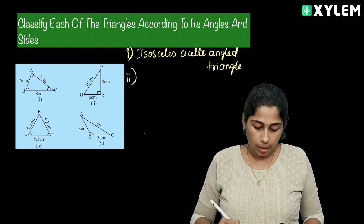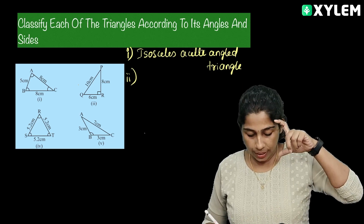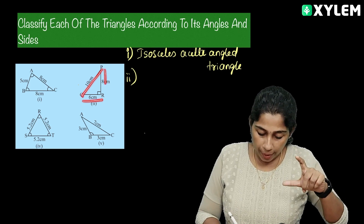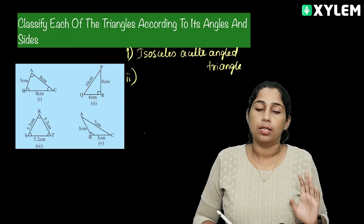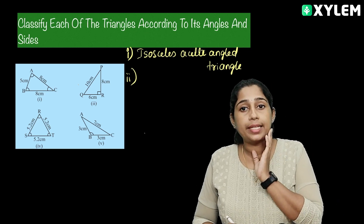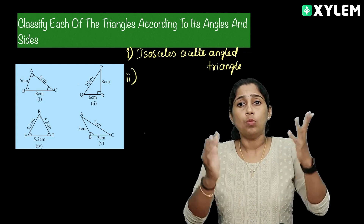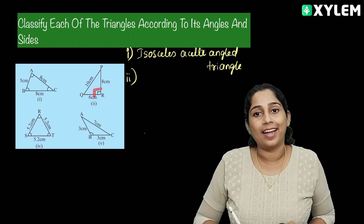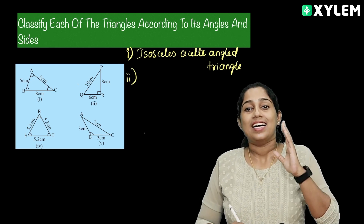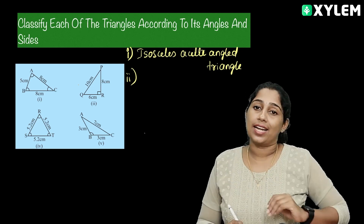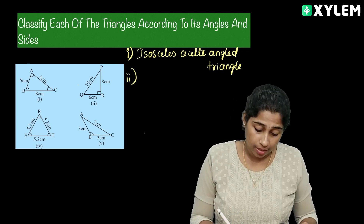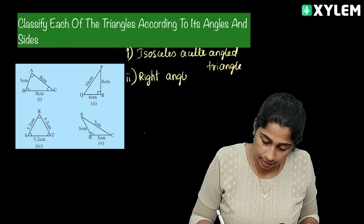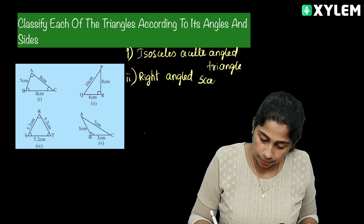Second figure: sides are 10 cm, 10 cm, 6 cm, and 8 cm — wait, three different sides. So what is the triangle? Scalene Triangle — three different lengths. Now looking at the angles, it is a Right Angle Scalene Triangle.